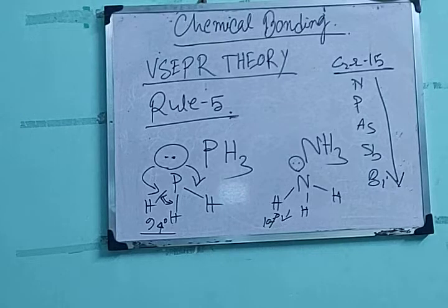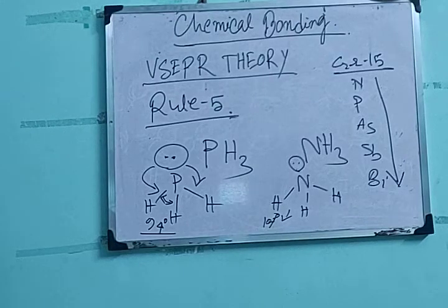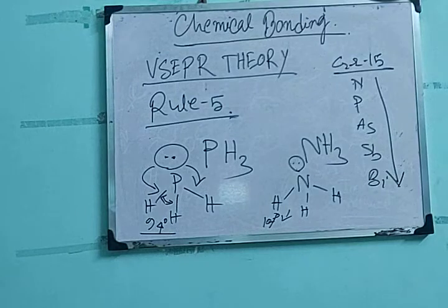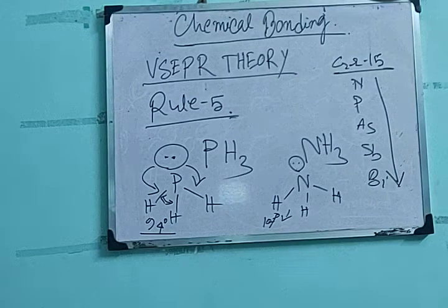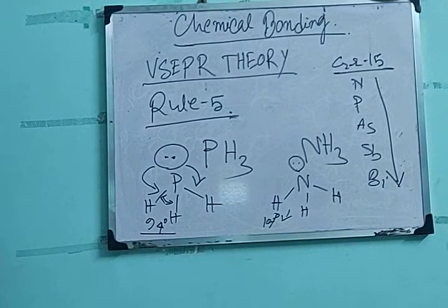So all the rules of VSEPR theory are now completed. Next class we will study how to find the structures. As we were saying, PH3 and NH3 are both tetrahedral, both having SP3 hybridization. Next class we will study about hybridization and how to find the shapes and structures of different molecules.